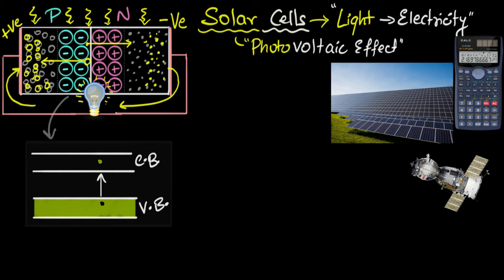Now, before we conclude, one confusion I always had was how are solar cells different than photodiodes? Something we saw in a previous video. They're also having very similar principle, right? Well, short answer is they're basically the same things. So even there, you're using photons to create electron hole pairs which get swept across by the electric field. The difference is in the application.